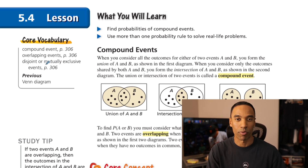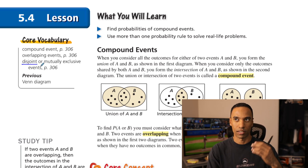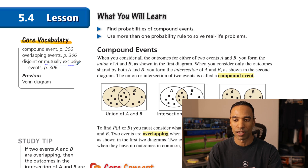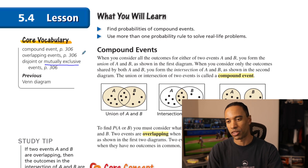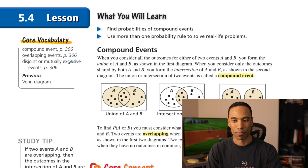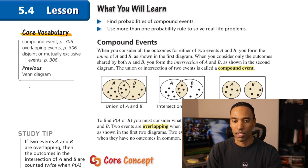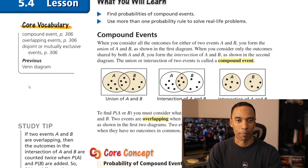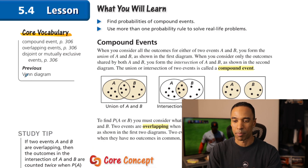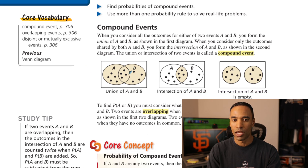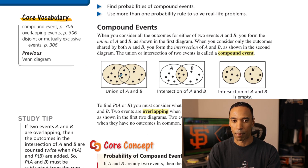I hardly ever use the phrase 'disjoint' myself — I tend to use the phrase 'mutually exclusive.' They are synonymous with each other, and I hope they tend to use both. Venn diagrams are something of the past you'd want to know about. Basically, with the overlapping circles idea, that's what a Venn diagram could be.